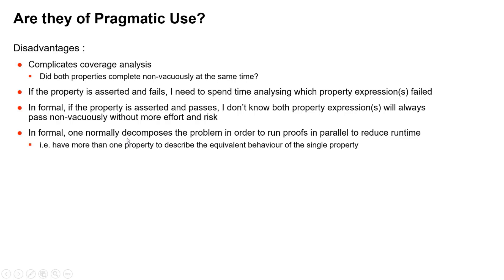In formal it does the exact opposite of what you would normally do. So normally in formal you decompose a problem into smaller parts in order to simplify the proof and improve runtime. If you have two properties instead of one, it means you can run those two things in parallel and reduce the runtime even more.